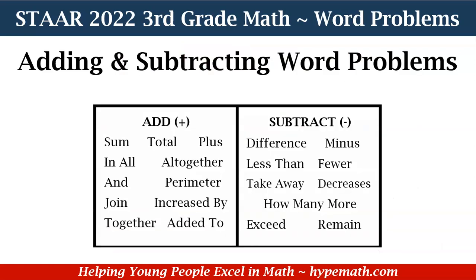Let's do a review about the words that, when we're reading them in word problems, may mean we need to add, subtract, multiply, or divide. Let's start with addition first. Addition keywords include: sum, total, plus, all, all together, and, perimeter, join, increased by, together, and added to.